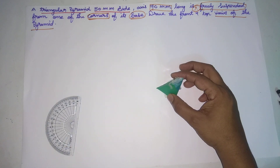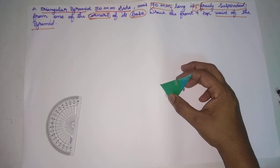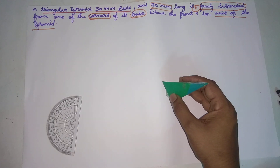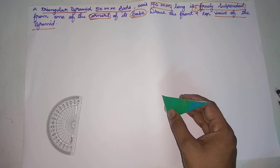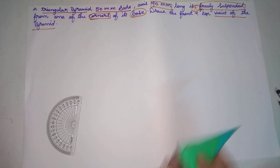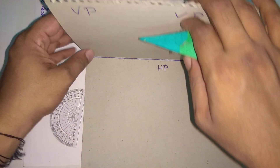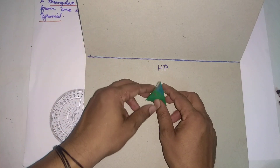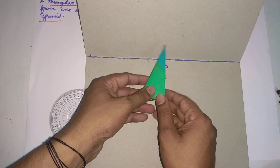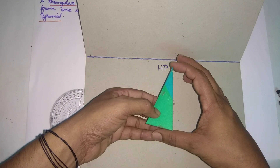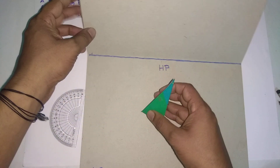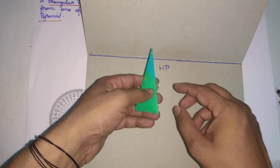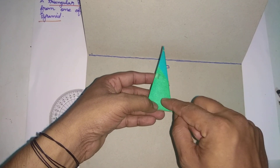The center of gravity — freely suspended. This is VP and this is HP. The center of gravity: the total distance is divided by 4, which gives the center of gravity. So 70 divided by 4 equals 17.5mm.